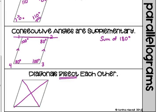Yes, they create an x. They go through the middle. Okay. Bisect means to cut in half.